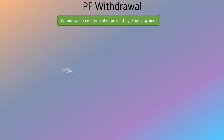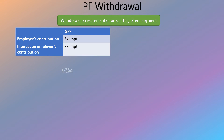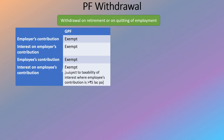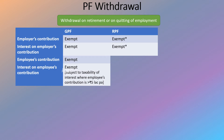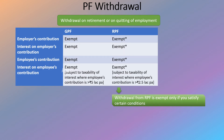So far we have discussed the tax treatment of PF contributions and interest earned. Now let's talk about PF withdrawal on retirement or when you quit your employment. For GPF, the employer's contribution is exempt, interest on the employer's contribution is also exempt, and the employee's contribution is exempt if PF contribution by the employee is up to 5 lakh for the year. For RPF, the employer's contribution is exempt, interest on the employer's contribution is also exempt, and the employee's contribution and interest thereon are exempt if annual PF contribution is up to 2.5 lakh.